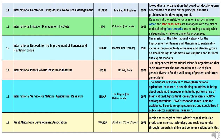Sixteenth is INIBAP — International Network for the Improvement of Banana and Plantain — headquartered at Montpellier, France, formed in 1985. Its mission is to sustainably increase the productivity of banana and plantain grown on smallholdings for domestic consumption and export markets. Seventeenth is IPGRI — International Plant Genetic Resources Institute — headquartered at Rome, Italy, established in 1974. It is an independent international scientific organization that seeks to advance the conservation and use of plant genetic diversity for the well-being of present and future generations.